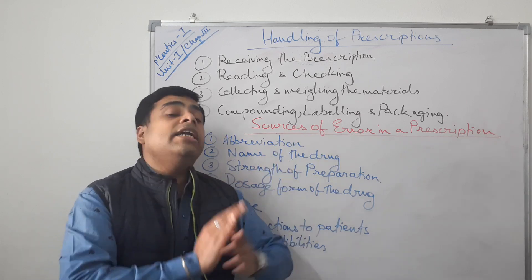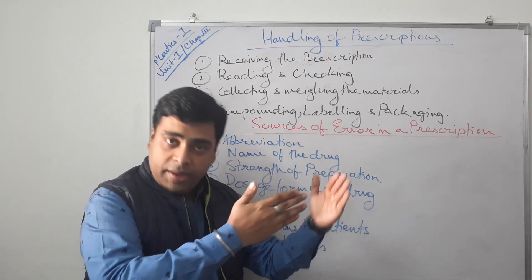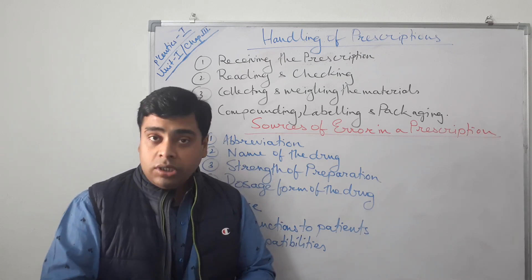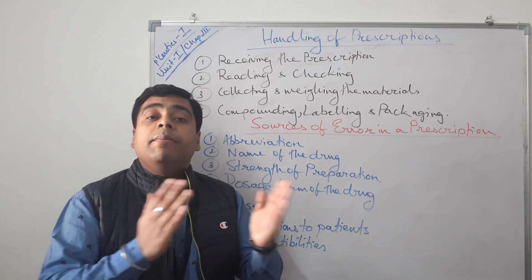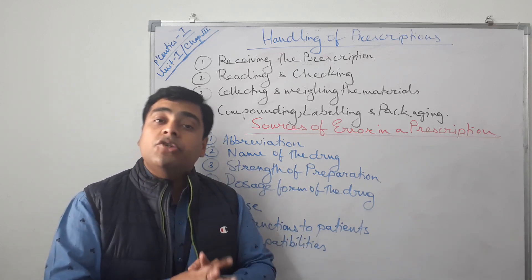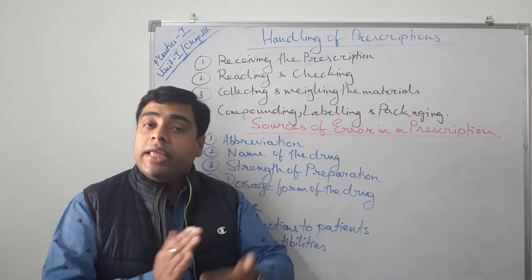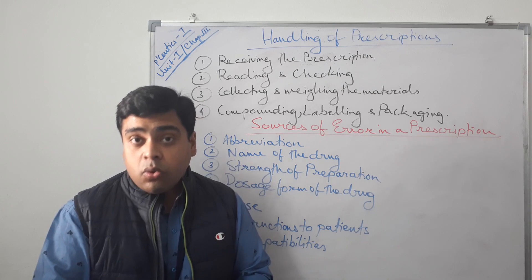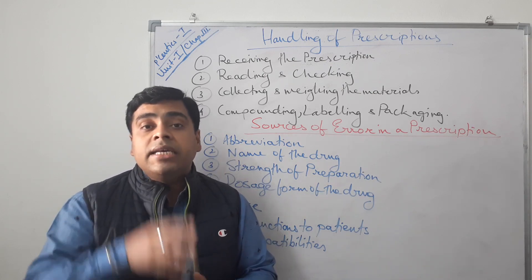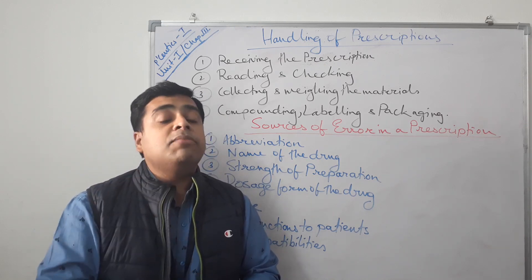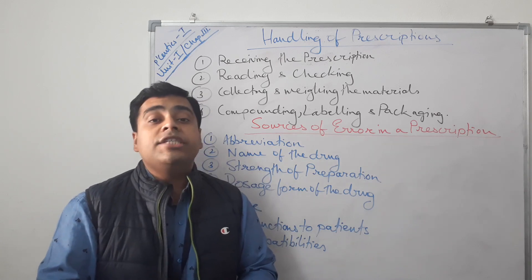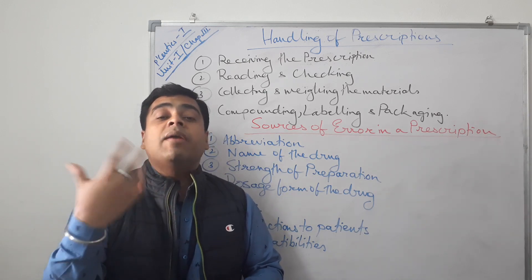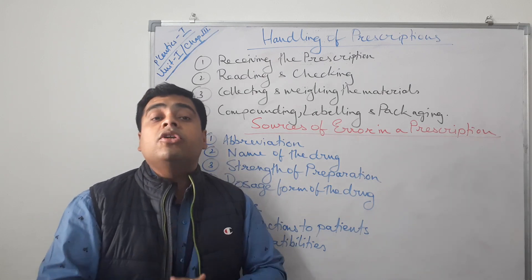We will study both the older model and modern-day prescription handling. First, receiving the prescription: a pharmacist should receive the prescription on behalf of the patient. When they receive the prescription and read it, even if the disease is life-threatening, the pharmacist's facial expression should show no changes, because the patient is already in a depressed state of mind.